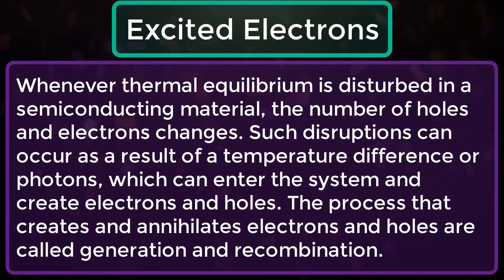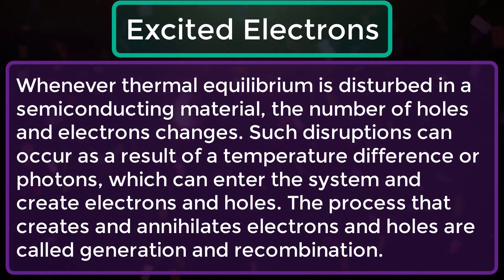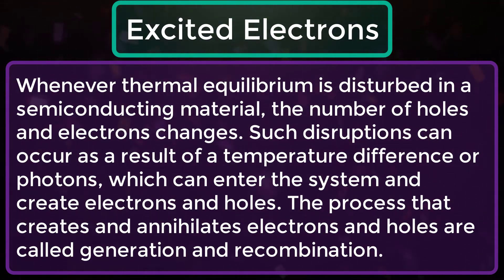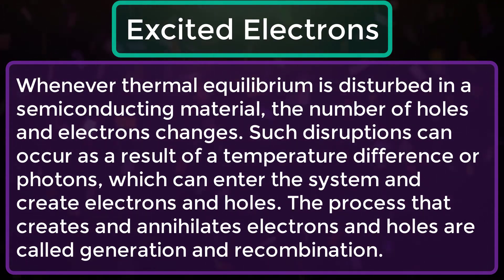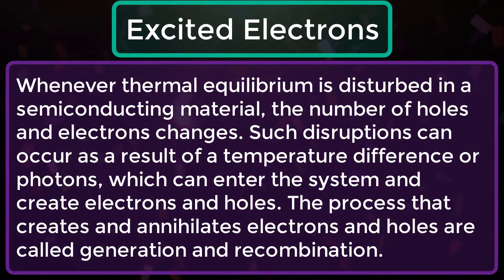Whenever thermal equilibrium is disrupted in a semiconducting material, the number of holes and electrons changes. Such disruptions can occur as a result of a temperature difference or photons, which can enter the system and create electrons and holes. The processes that create and annihilate electrons and holes are called generation and recombination.